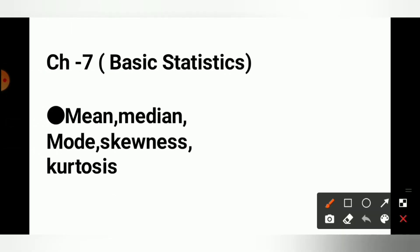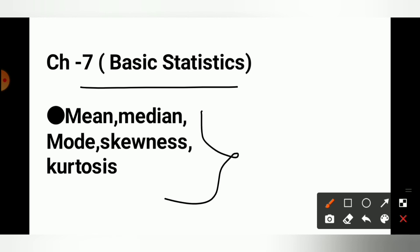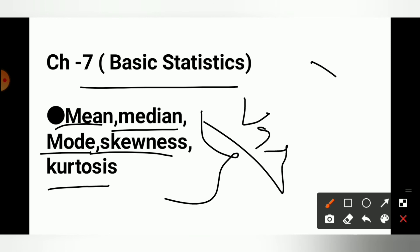Last Chapter है — Basic Statistics। सबसे Important Chapter and सबसे Easy Chapter, जिसमें से ये जो topic मैंने बुला है वो main है: Median है, Mode है, Skewness, Kurtosis — जो various-various topic है वो Important है। वो आपको करना है। तो ये बातें थी Electrical Engineering 3rd semester के लिए।